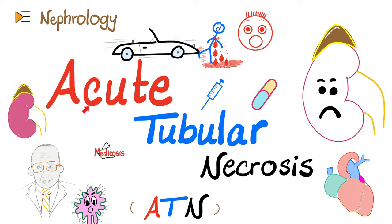Why acute? Because it happened quickly. Why tubular? Because the tubules of my kidney are toast. Why necrosis? Because this is cell death. Ischemia can cause it, sepsis can lead to it, and heavy metals and medications can also cause acute tubular necrosis. Let's get started.